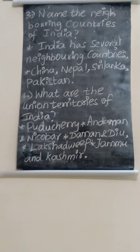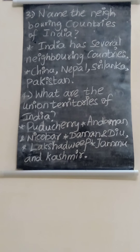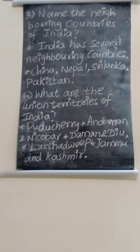So how many union territories does our country India have? Totally nine union territories are there, such as Puducherry, Andaman and Nicobar Island, Daman and Diu, Lakshadweep, Jammu and Kashmir, and the National Capital Territory of Delhi. These are called our union territories of India.